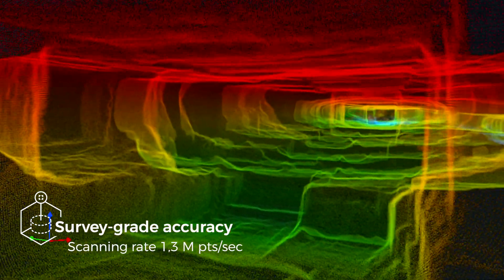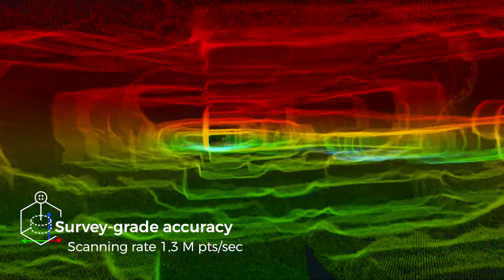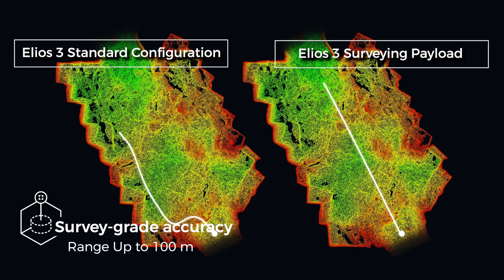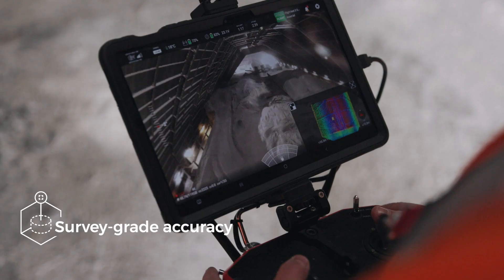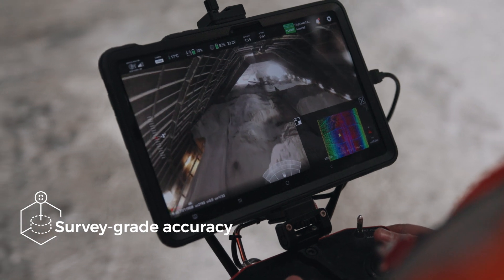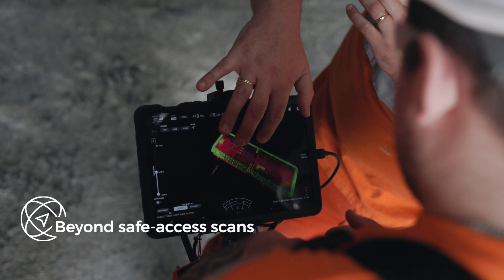With a range of 100 meters, a point density of 1.3 million points per second, and a capacity to cover a 300 meter tunnel in a single flight, Helios 3 turns multiple days of scanning into a 10-minute job.